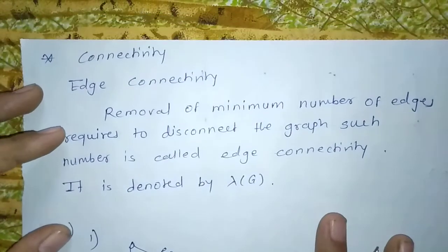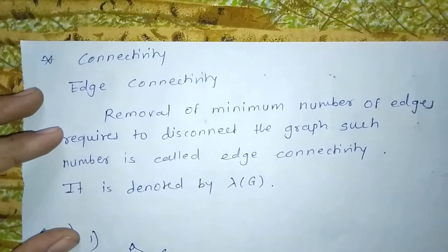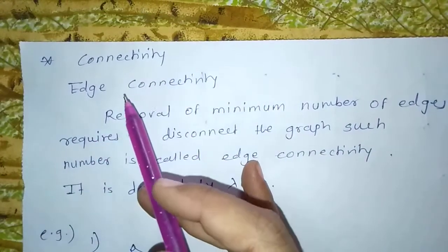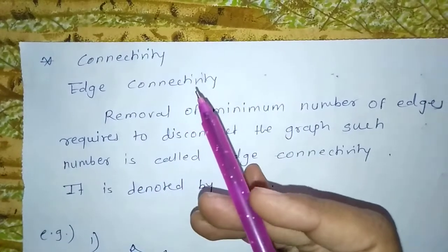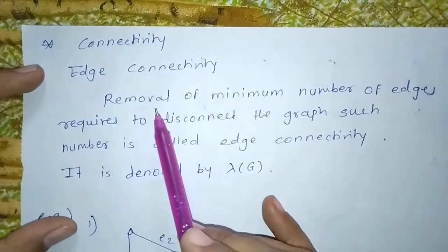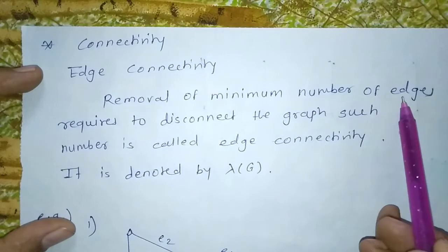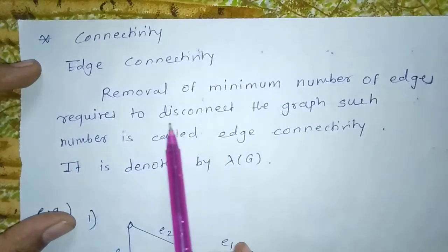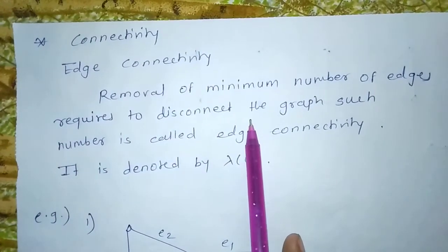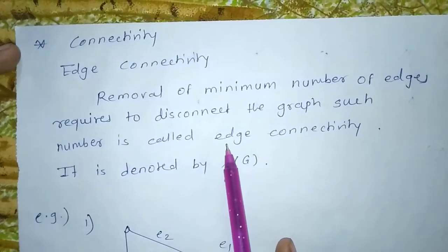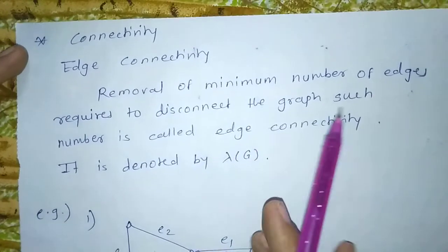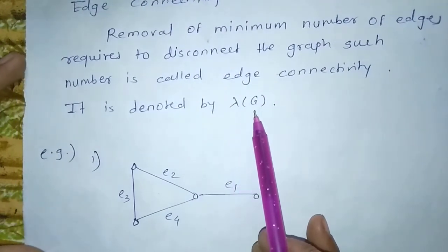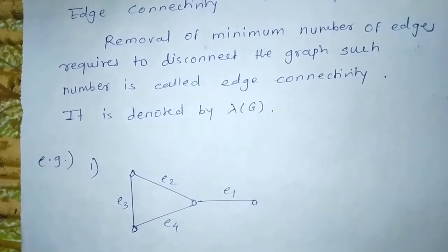Hello students. The next point is connectivity. First, edge connectivity. The definition of edge connectivity is the removal of the minimum number of edges required to disconnect the graph. Such number is called edge connectivity. It is denoted by lambda of G.